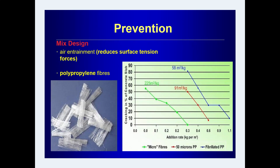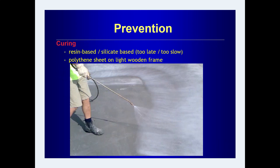The solution and remedy lies in mix design. Air entrainment improves prevention of cracks. Fiber can be added — adding fibers reduces plastic shrinkage cracks. For curing, resin-based or silicate-based curing agents need to be applied. A polythene sheet on a light wooden frame can also be used to avoid loss of moisture.